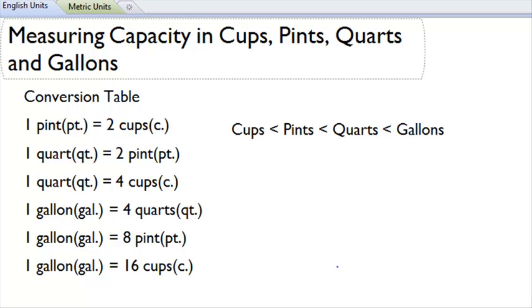Today we're going to talk about measuring capacity in English units. The English units of capacity are cups, pints, quarts, and gallons.